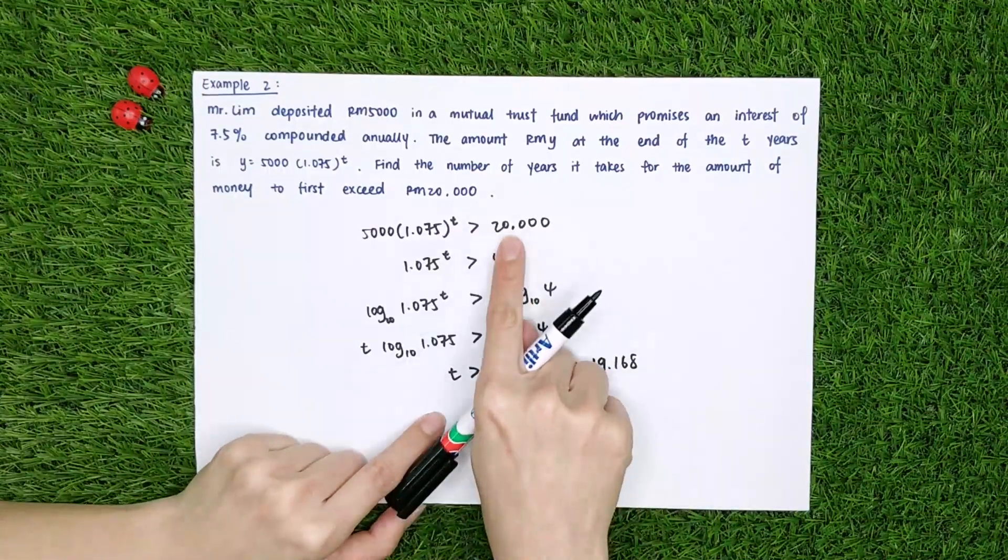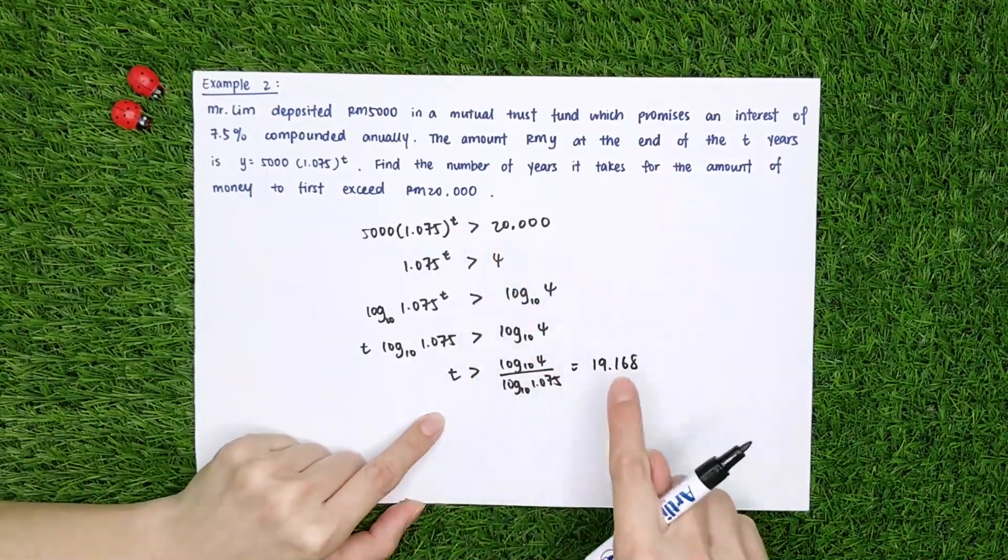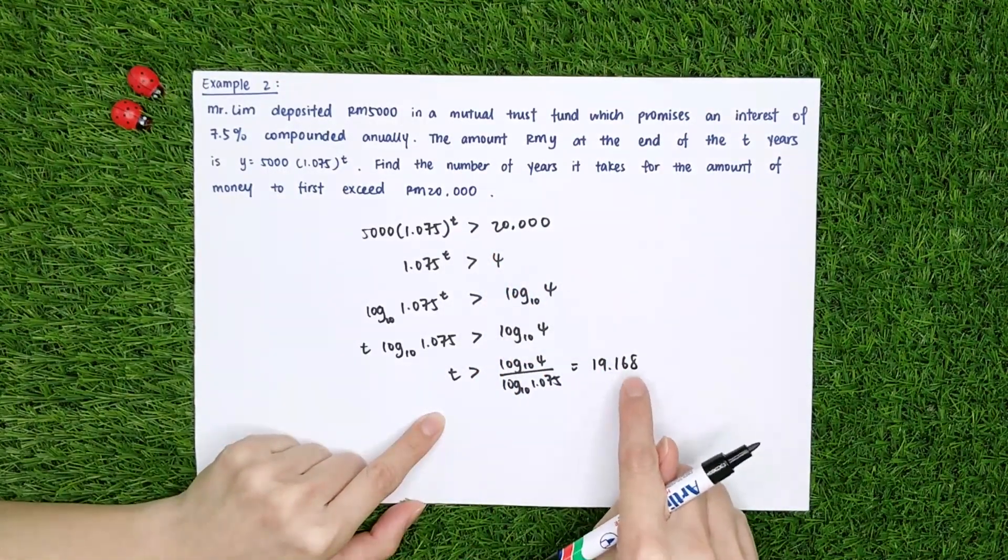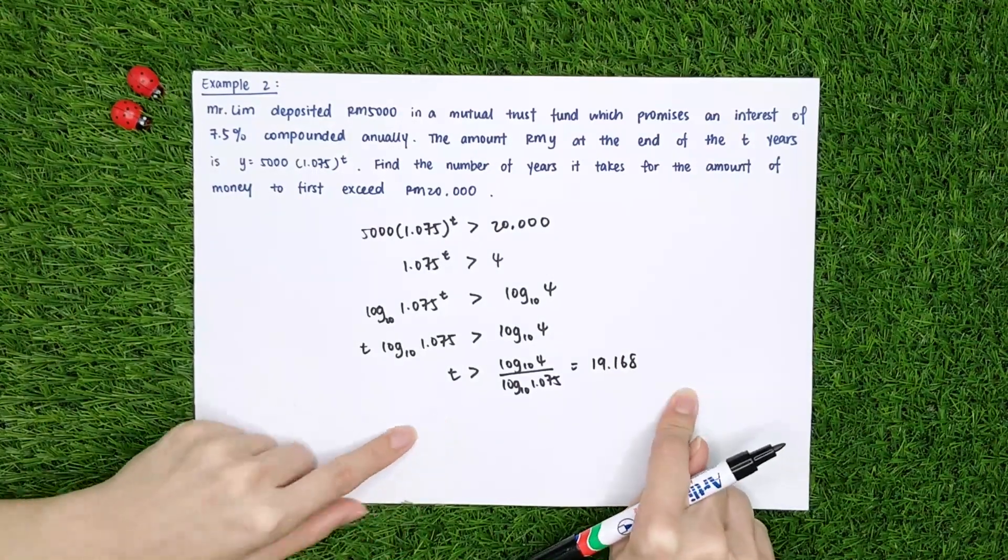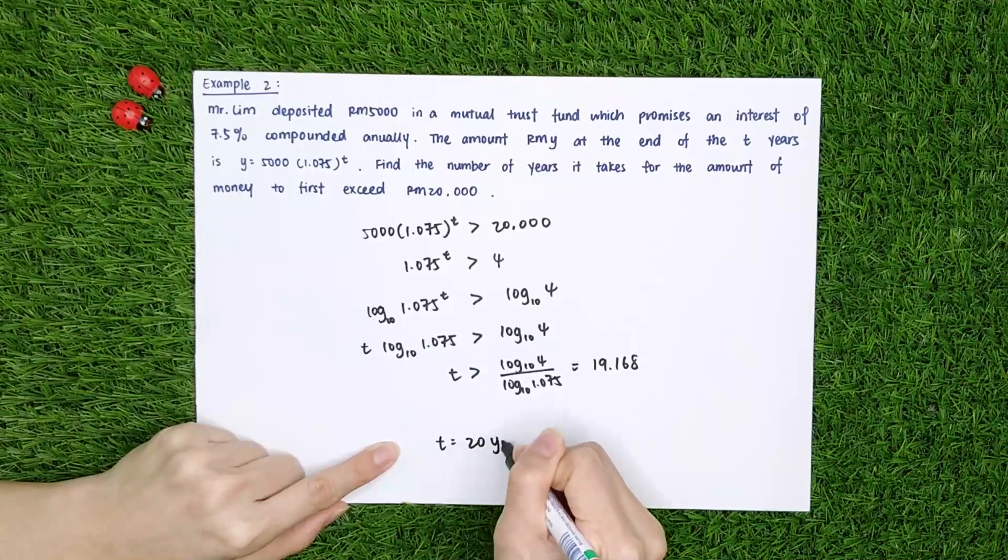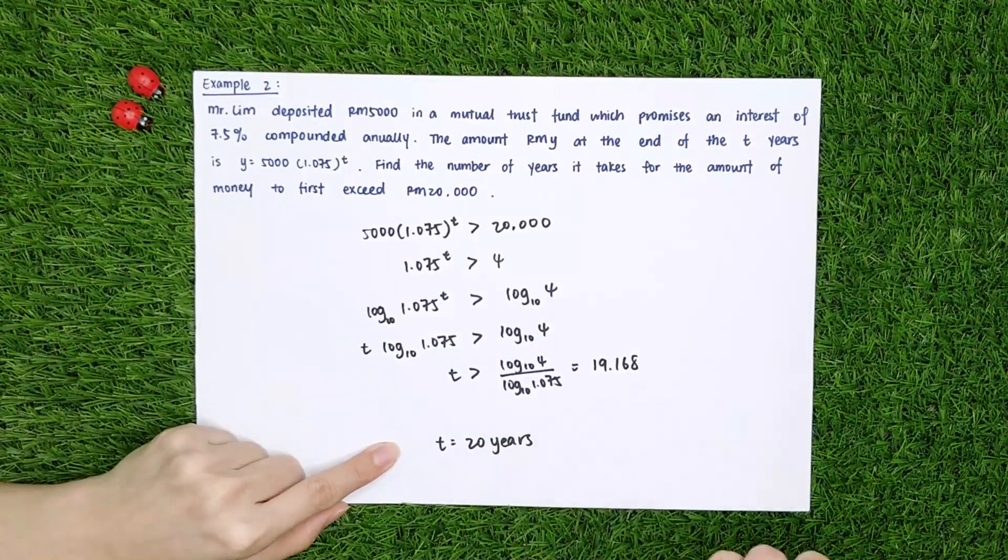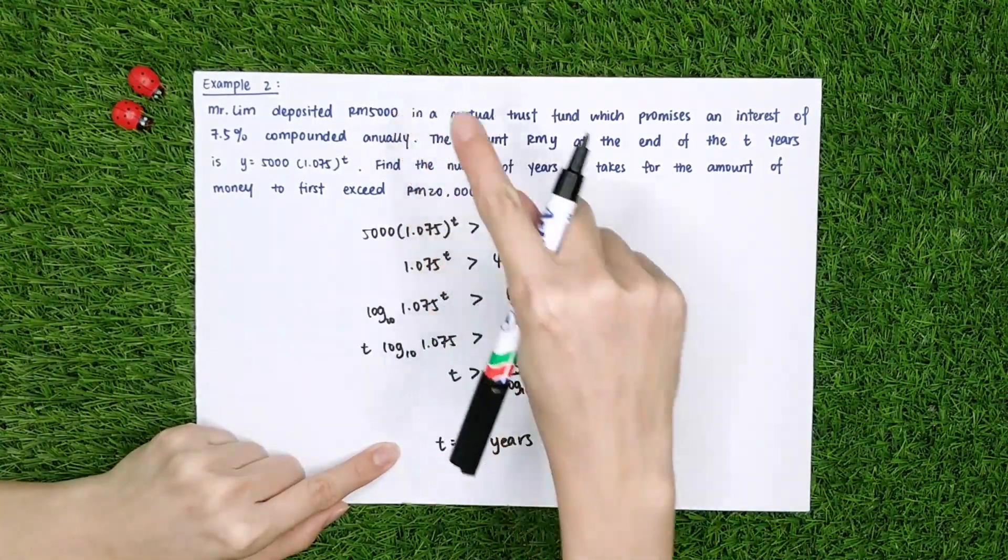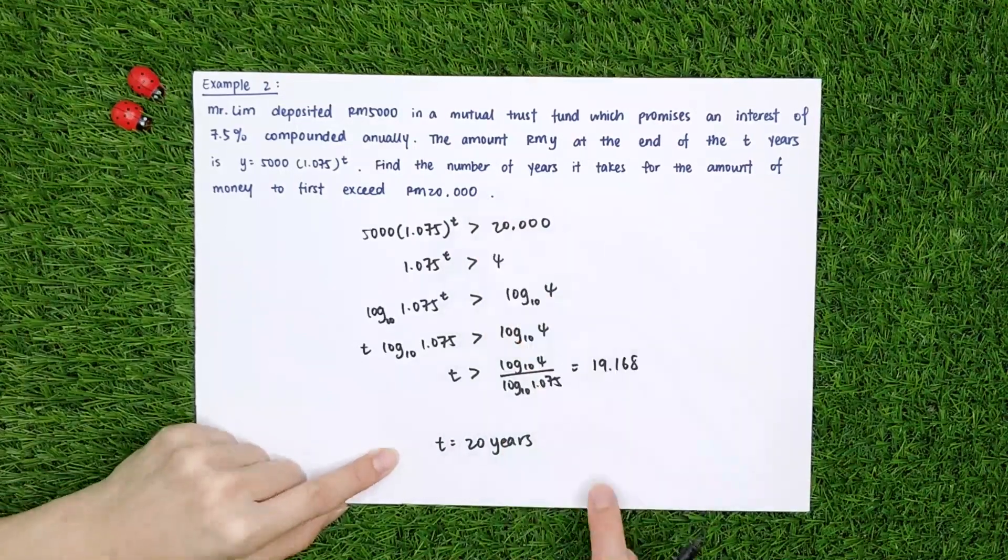Okay, for me to get more than $20,000, I must wait until more than 19.168 years. Okay, so that means I have to wait for 20 years. After 20 years, my $5,000 will become more than $20,000.